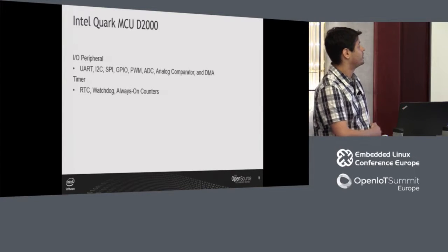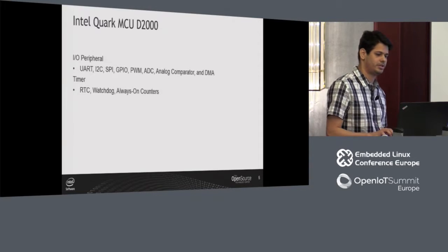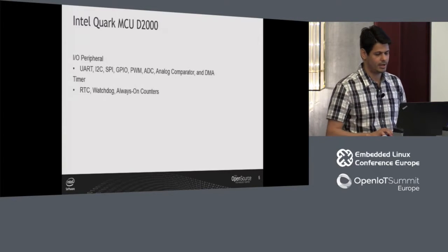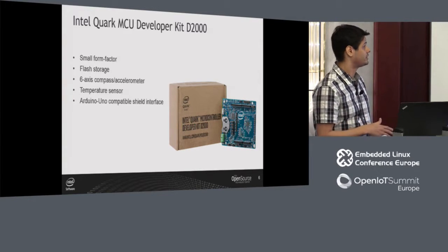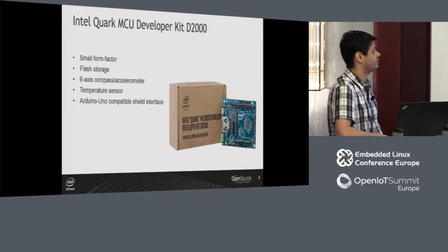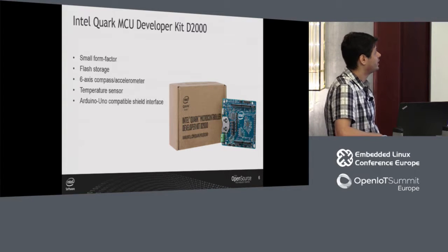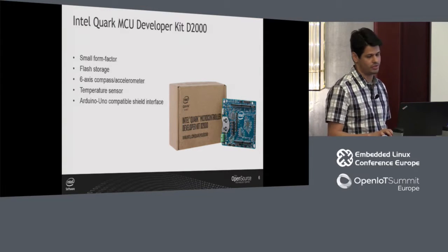The D2000 has the most standard IO peripherals: UART, I2C, SPI, and so on. It provides a few timers — one of them is RTC, Watchdog, and some always-on counters which, as the name says, are always running even in a power state mode. You can find the D2000 on a dev kit, which is basically a breakout board for the SOC. It has extra flash storage on board, a few sensors, and is Arduino-compatible, so you can use your shields with this board.